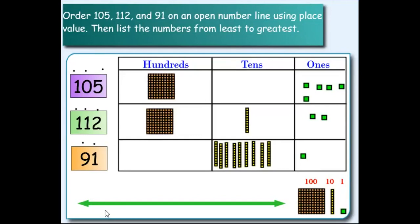We're going to use this open number line to display our numbers. Remember that the number line will always go from the least to the greatest. When we compare numbers, we start with the largest place value first, which is the hundreds place value.